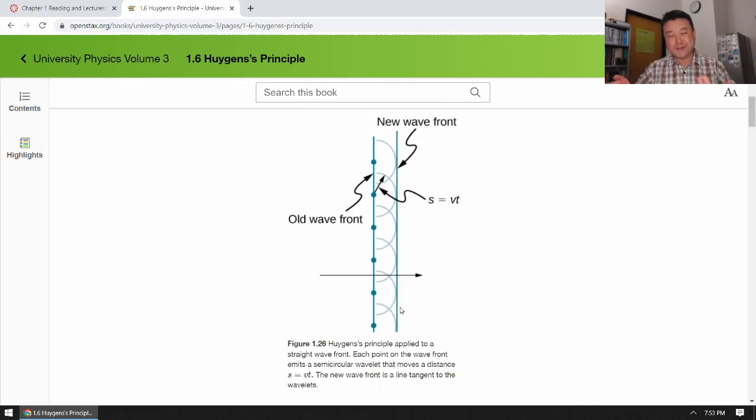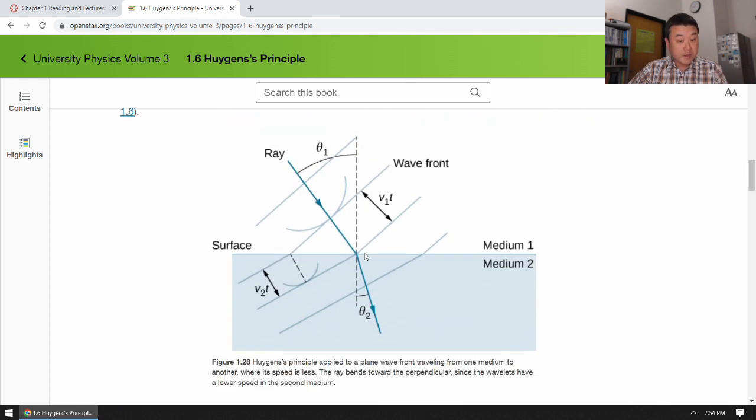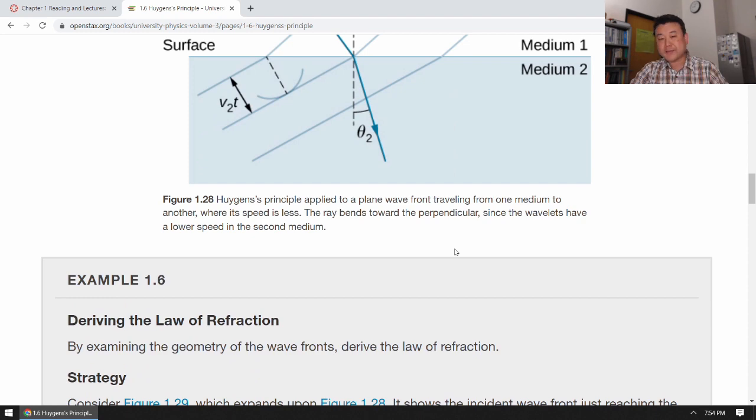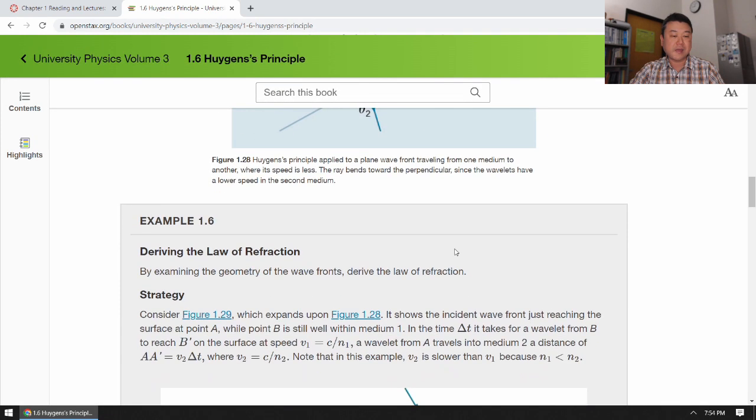I'm not quite sure why your textbook includes this as part of chapter one. But it is useful for deriving some of the things that we take for granted in geometric optics. So in lecture, I actually use this figure to derive Snell's law from considering that this picture that comes from Huygens principle, the consideration of these wave fronts. And you can take a look at that.